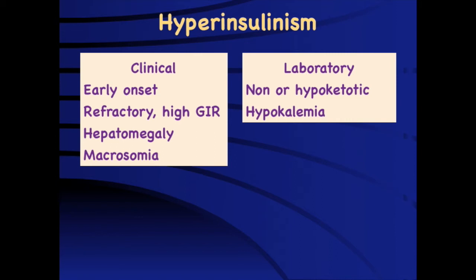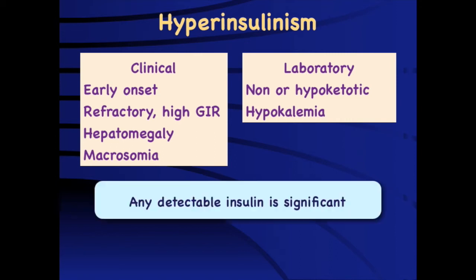Hypokalemia is an important clinical pointer towards hyperinsulinism. What we need to understand is that hyperinsulinism doesn't mean the insulin level must be high. Any child who is hypoglycemic should shut off insulin production and therefore have undetectable insulin. So any detectable insulin during hypoglycemia is significant.